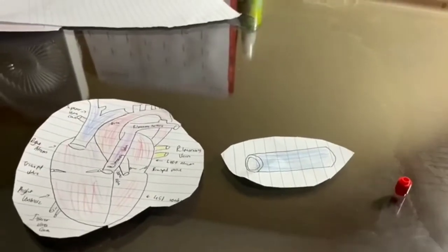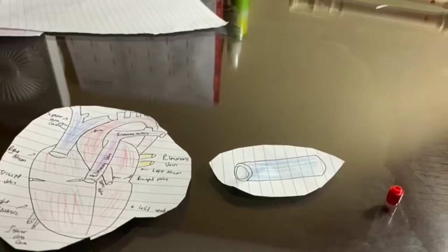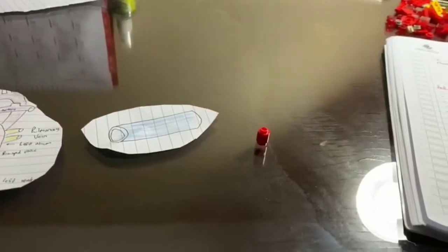There are three parts to the circulatory system: the heart, the blood vessels, and the blood.